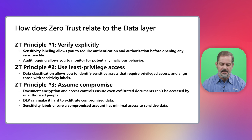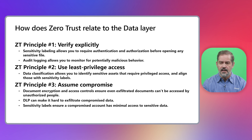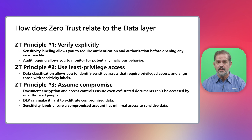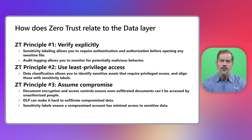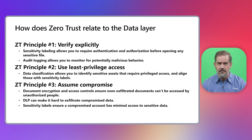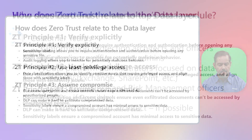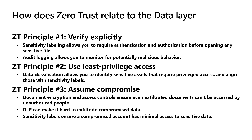The first principle in Zero Trust is to verify explicitly, meaning you need not to make assumptions. You need to make sure that a user claiming to access certain data is who they say they are and that they do have access to that data. Sensitivity labels come in handy here because you can require that the user is authenticated and authorized before accessing sensitive data. You can check credentials and necessary privileges regularly, and use audit logging technologies to monitor your environment, pinpoint potential malicious behavior, and identify potential cases of data abuse or misuse before it becomes pervasive.